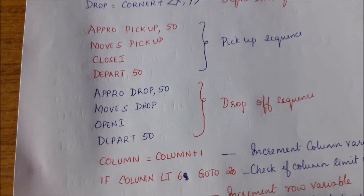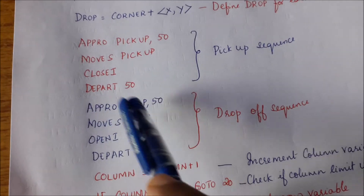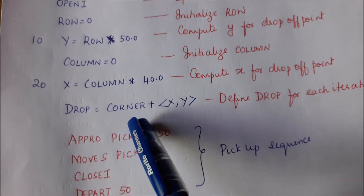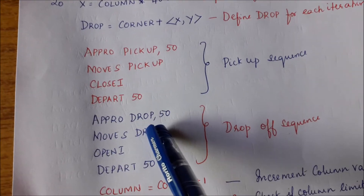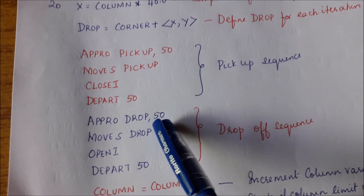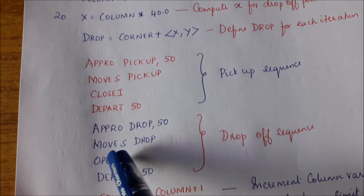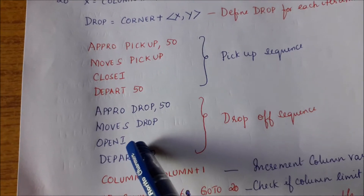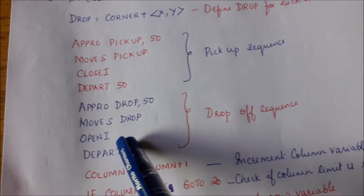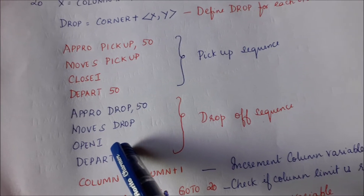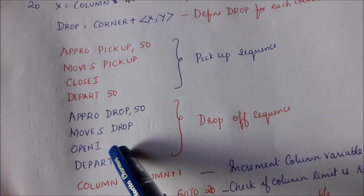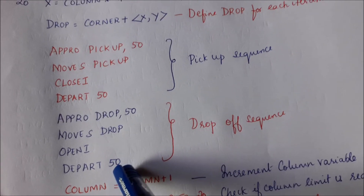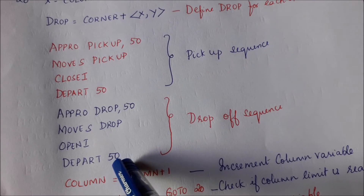Next is the drop sequence. Approach the drop point — currently defined as the corner, which is the first location — but approach above it by 50 units. Then move in a straight line down to the drop point. Open the gripper immediately; the part held by the gripper will drop onto that drop point. Then depart upward, going above the drop point by 50 units. The first part has now been placed at the corner location.